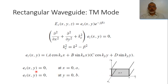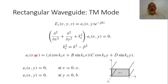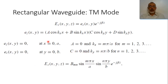By applying the boundary condition at x equals 0, the sine term becomes 0, so only the cosine term remains, meaning the value of a equals 0. Similarly, applying at y equals 0, the sine term is 0, so c equals 0. Therefore, a equals 0 and c equals 0, meaning that the electric field Ez as a function of x and y is proportional to sin(kx·x)·sin(ky·y).